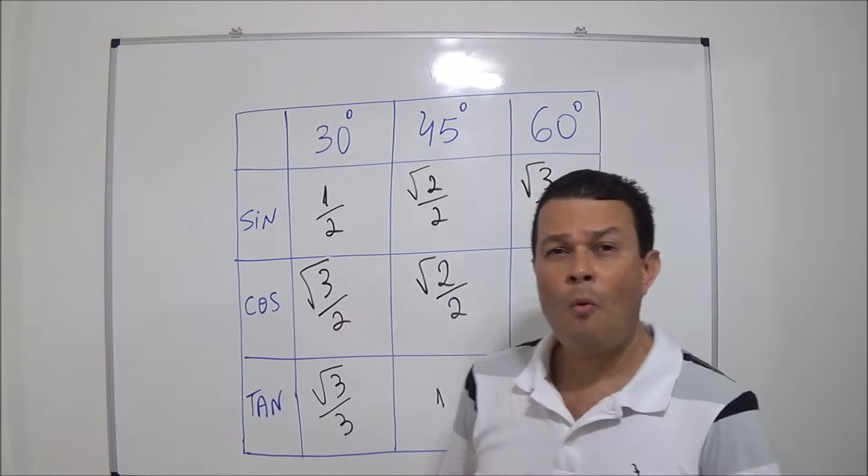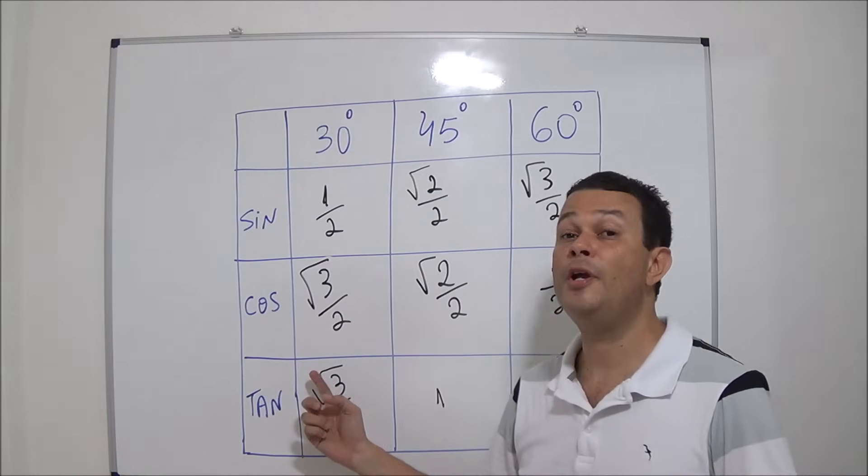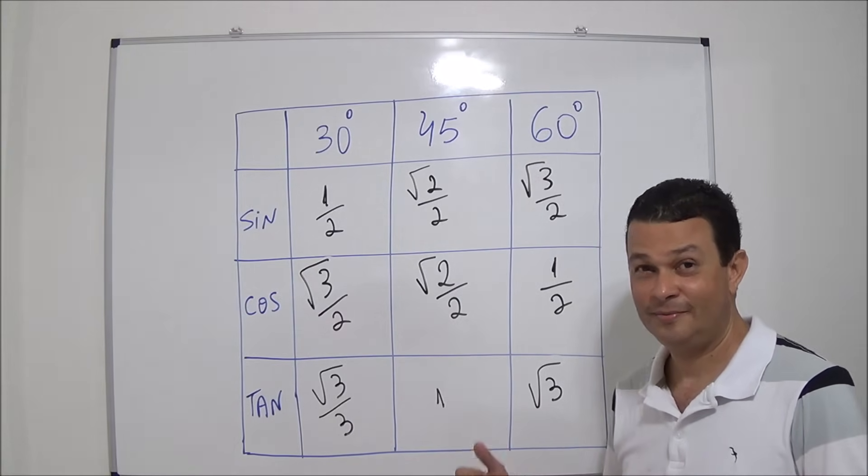And if I ask you, what's tangent of 45? Square root of three over three. One. Stop here. This is the answer. Alright.